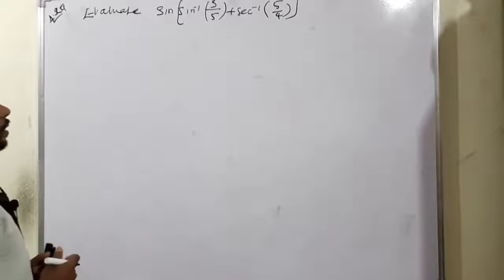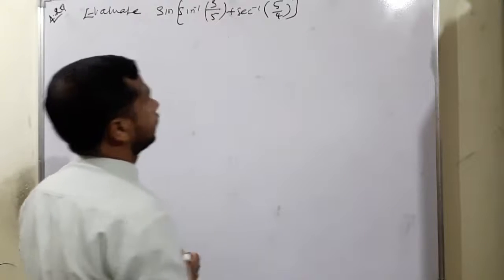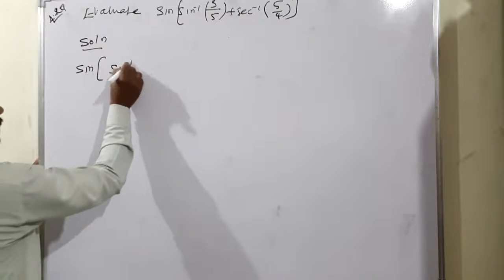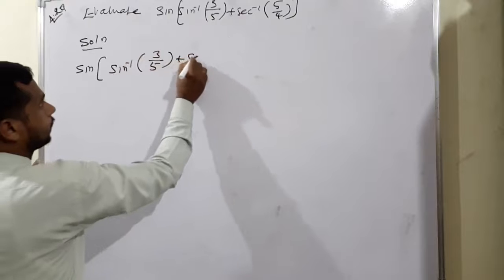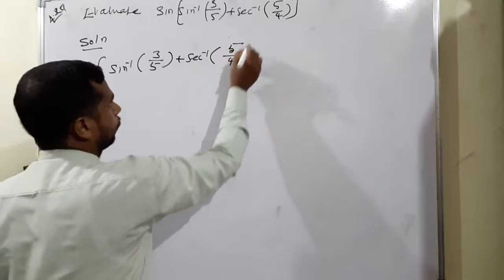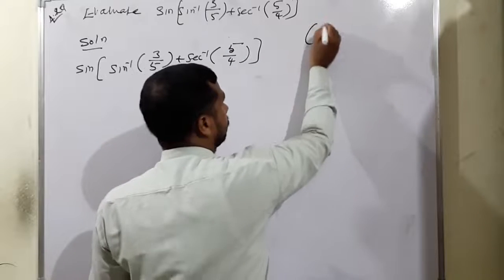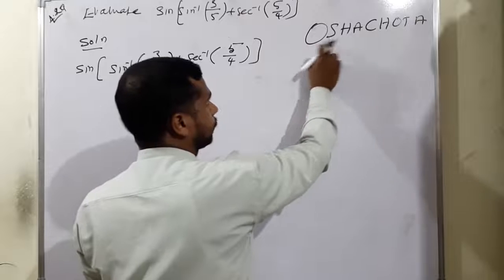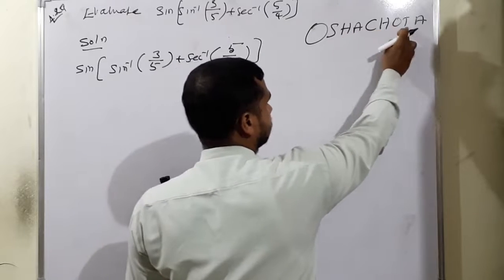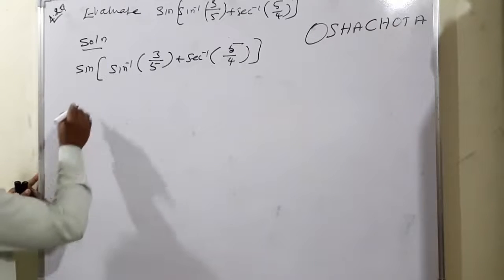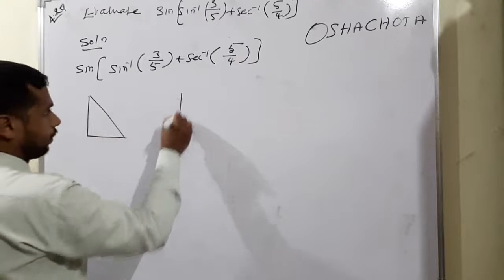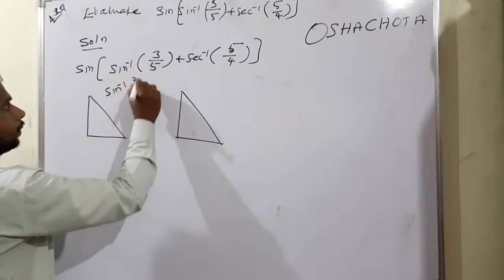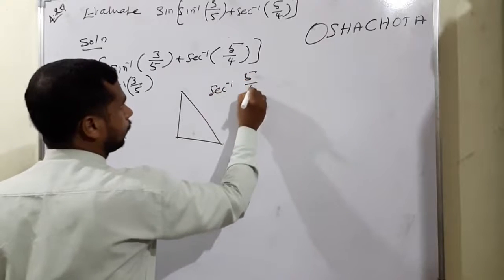Moving to example 4.20. Question: Evaluate sin(sin inverse(3/5) + sec inverse(5/4)). We draw two right triangles using SOH-CAH-TOA. First condition: sin inverse(3/5) — sine = opposite/hypotenuse, so opposite = 3, hypotenuse = 5, giving adjacent = 4. Second condition: sec inverse(5/4) — secant = hypotenuse/adjacent, so hypotenuse = 5, adjacent = 4, giving opposite = 3.